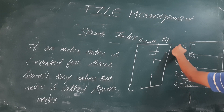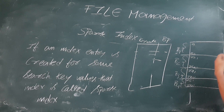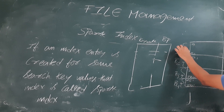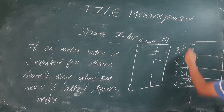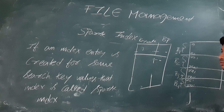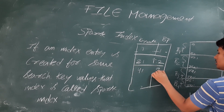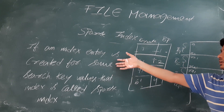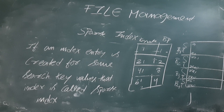The main requirement of sparse indexing is that all records in the main file must be in sorted order. For example, with records 1 to 80 sorted across four blocks, I only create index entries for: record 1 in block one, record 21 in block two, record 41 in block three, and record 61 in block four. So the number of entries in the index file is less than the number of records in the main file — this is sparse indexing.